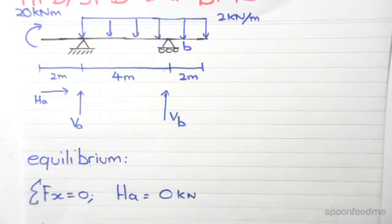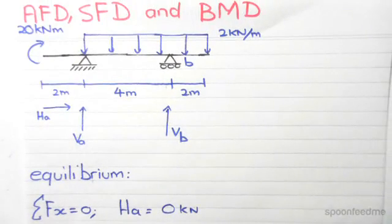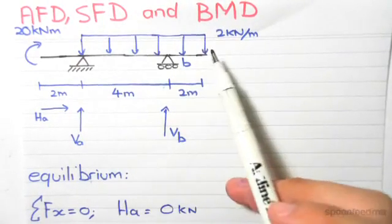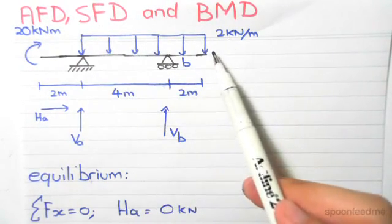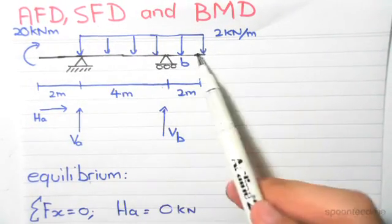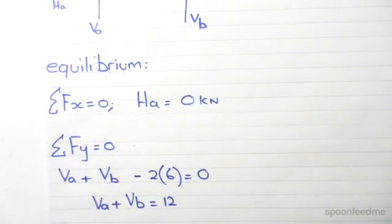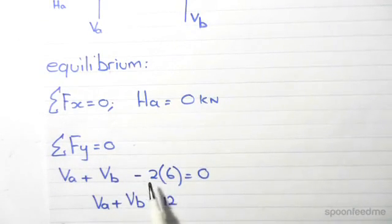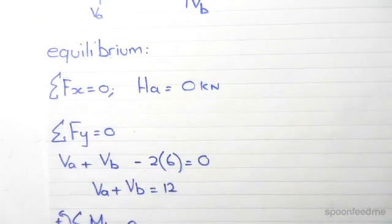Next we take the sum of forces in the y direction. We have VA plus VB minus 2 times 6. VA and VB are positive. We subtract 2 times 6 because we have this UDL pointing downwards, spanning over 6 meters. We have to convert the UDL into a point load by multiplying the UDL by its span. Rearranging, we get VA plus VB equal to 12 kilonewtons.